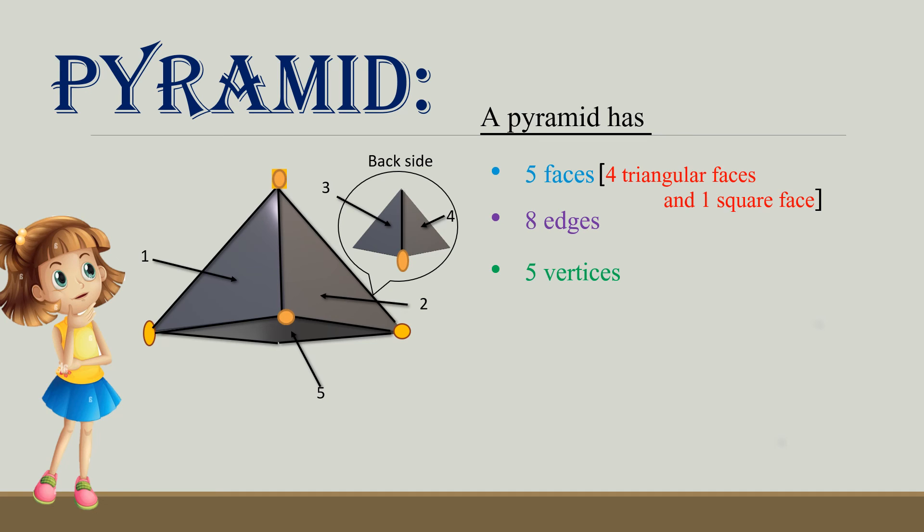So, a pyramid has five faces, eight edges, and five corners or vertices. Examples: Pyramids of Egypt and tent.